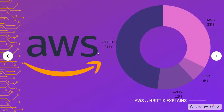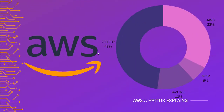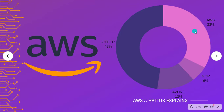So firstly, what is AWS? AWS is the cloud handle of Amazon, which is the most profitable branch. It has 33 percent of the 80 billion dollars cloud computing market.